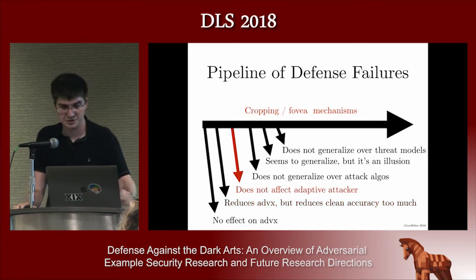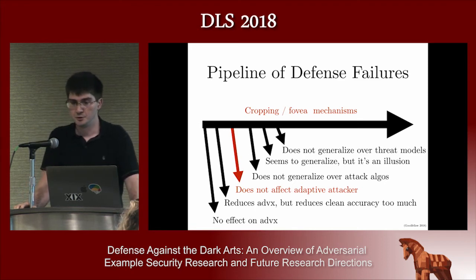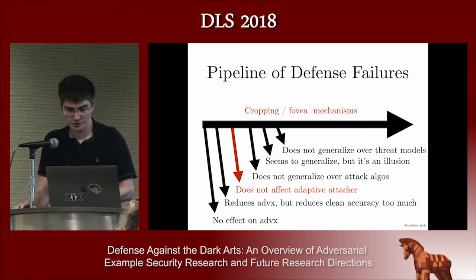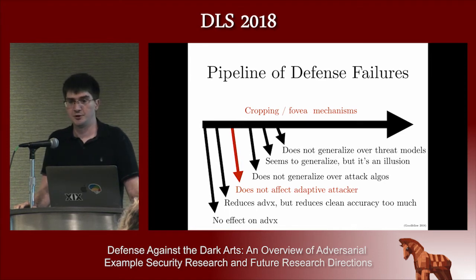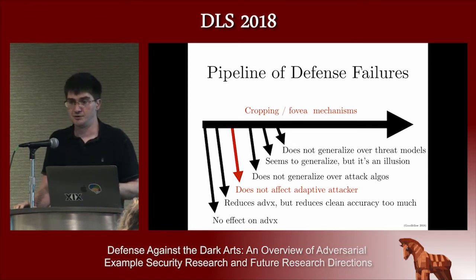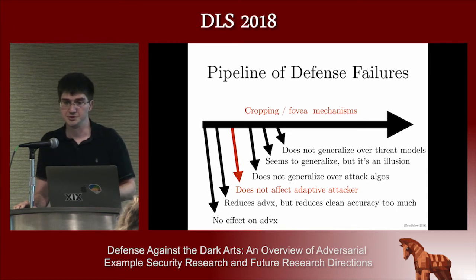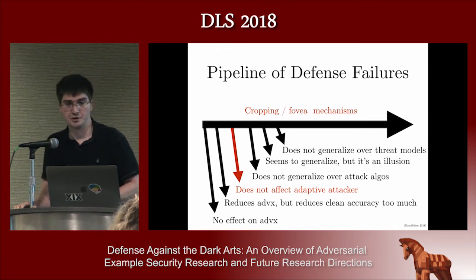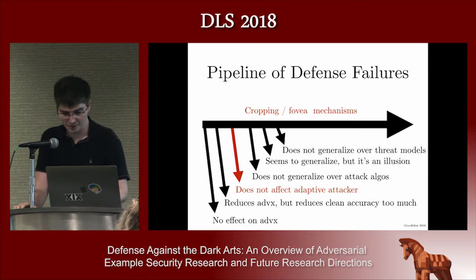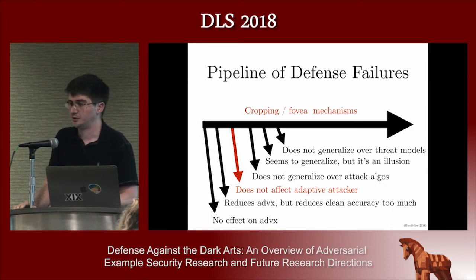Another stage in the pipeline is when you start to see an effect on adversarial examples and preserve accuracy on clean examples, but you don't actually generalize to an adaptive attacker. An example of this is using cropping or fovea mechanisms. When adversarial examples were first published, a lot of people reacted by saying the human brain doesn't actually process a single static image — your eyes glance around the scene constantly, and maybe multiple glimpses from different translated positions can help recognize the image correctly. That's been refuted several times, most recently by Nicholas who presented earlier this morning.